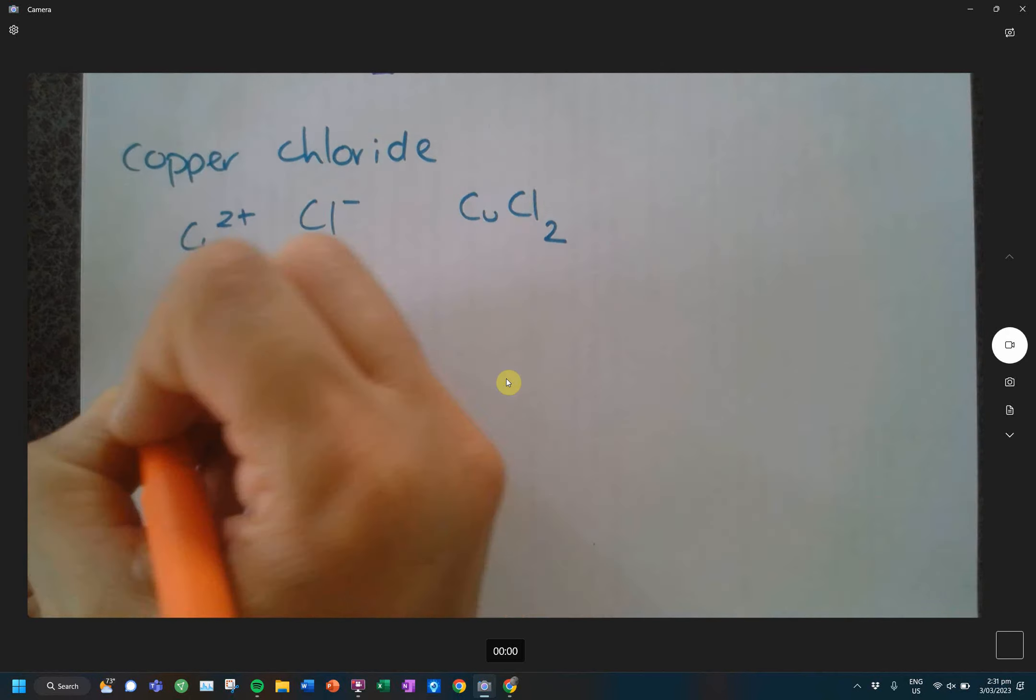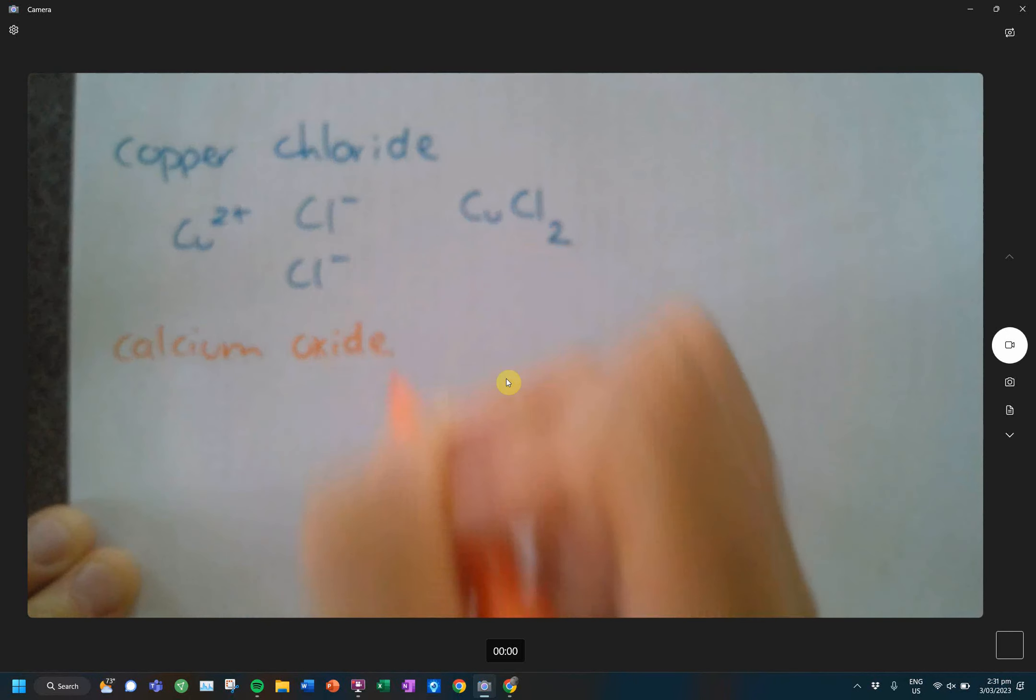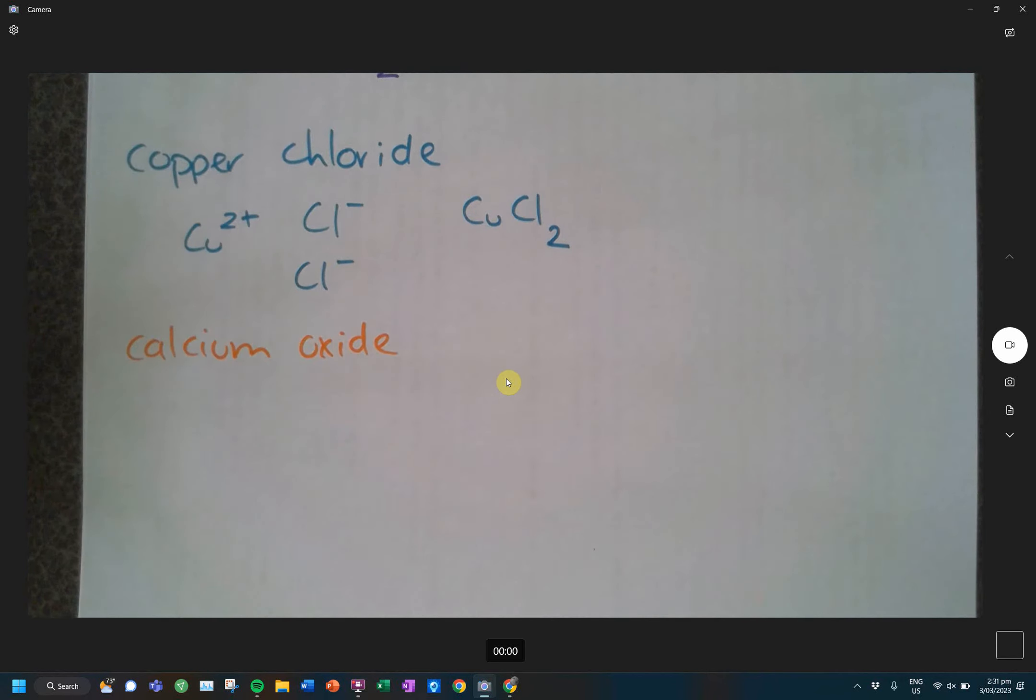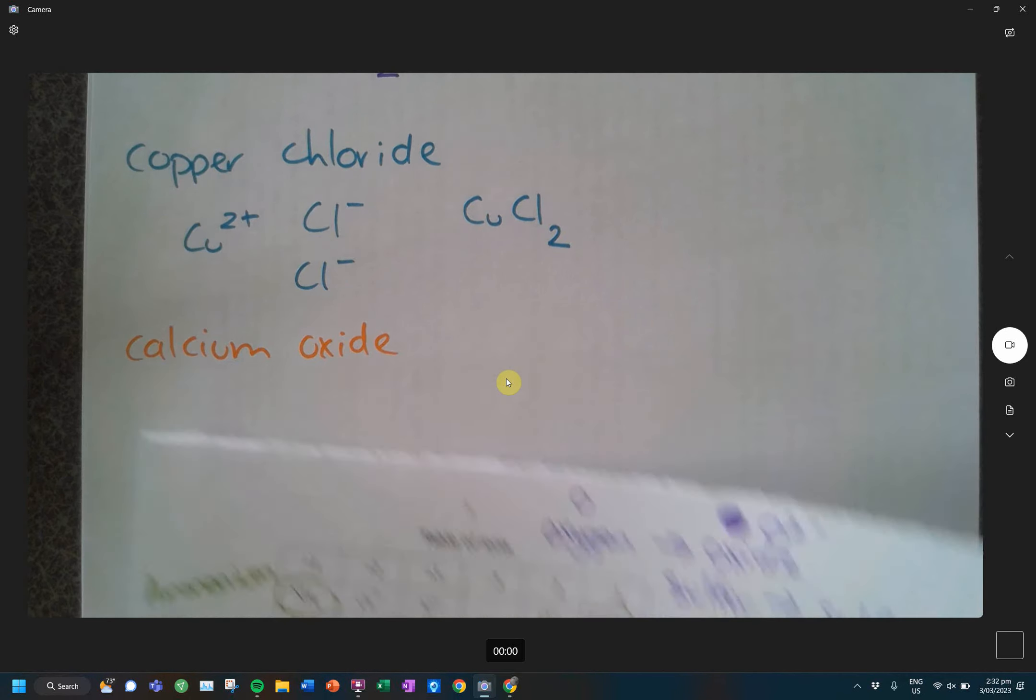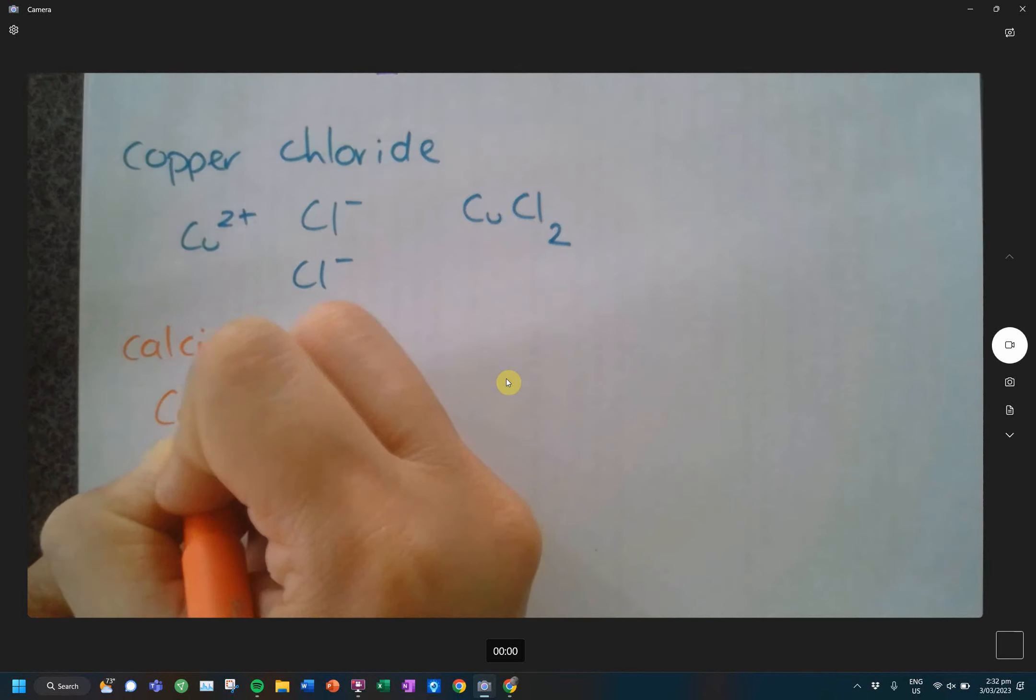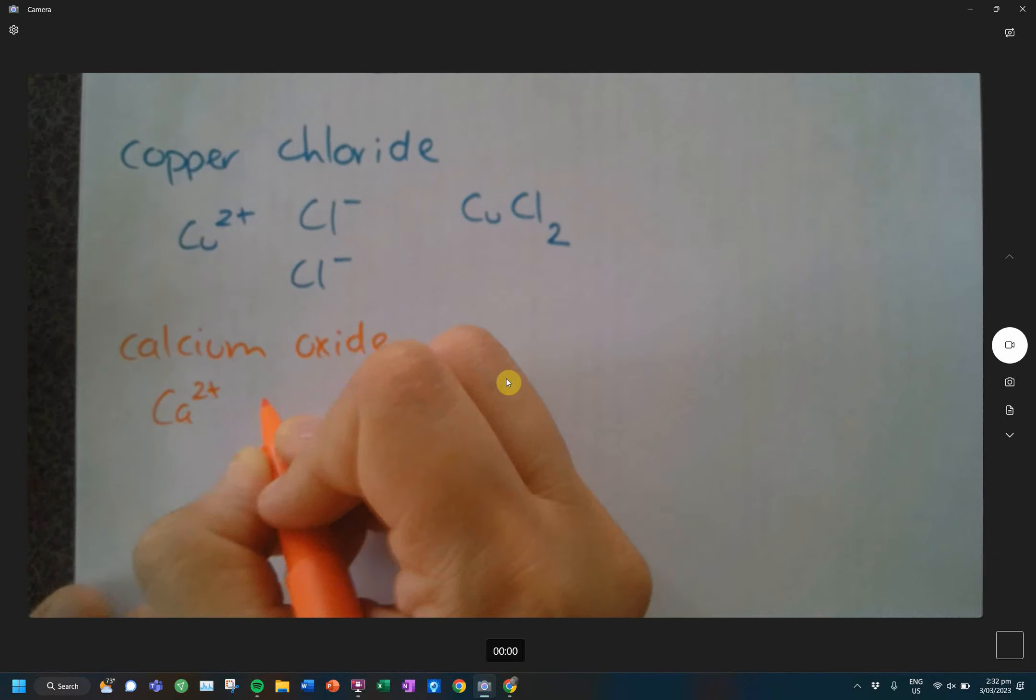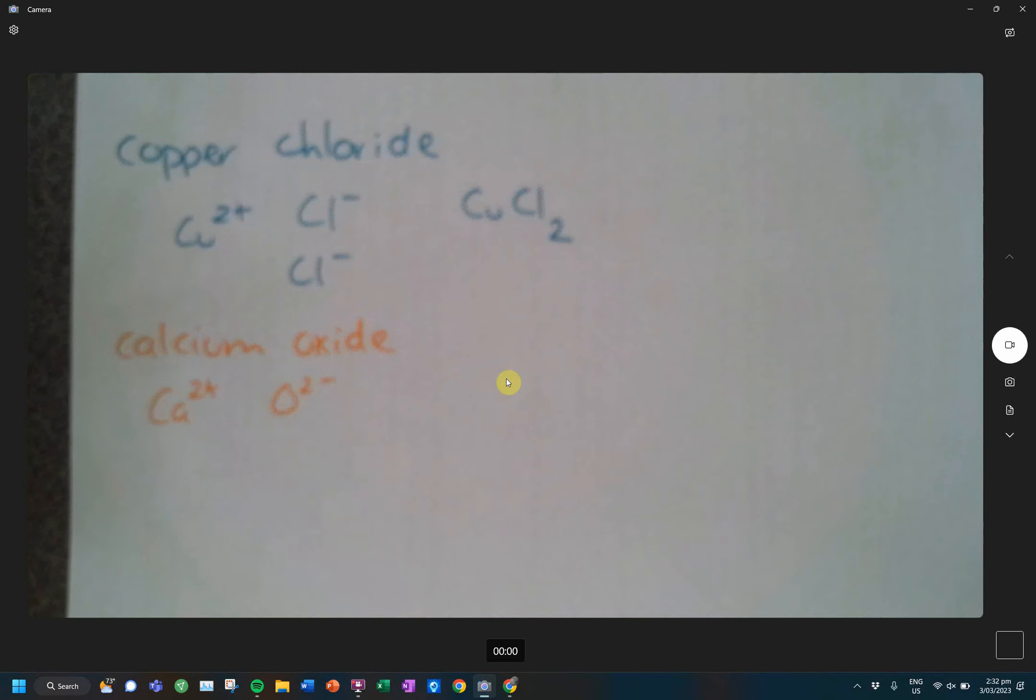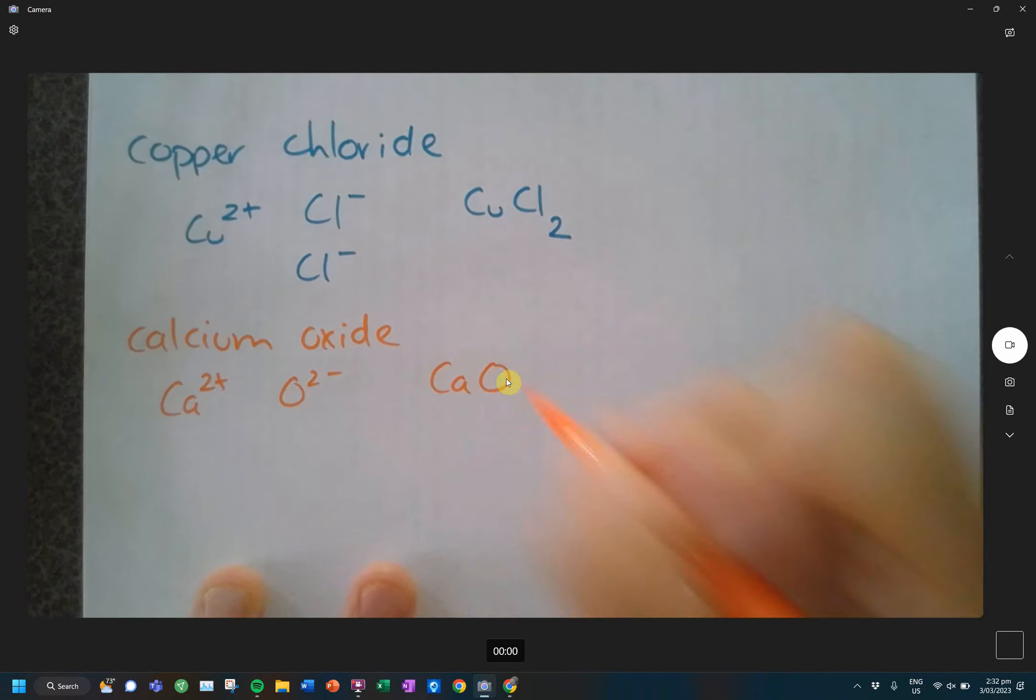Calcium oxide. So, what's the charge of calcium? Two. Remember, group two. And then, what about the charge of oxide? Negative two. So, are these guys balanced? Yes, they're already going to add to zero, so I don't need to add any extras. CaO. Done with that one.